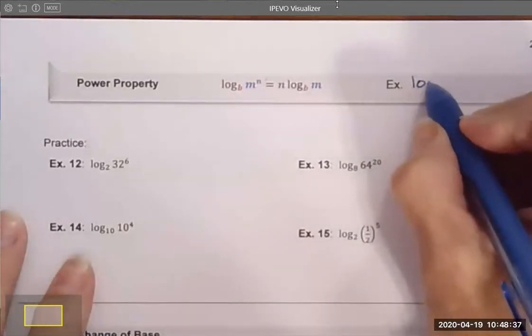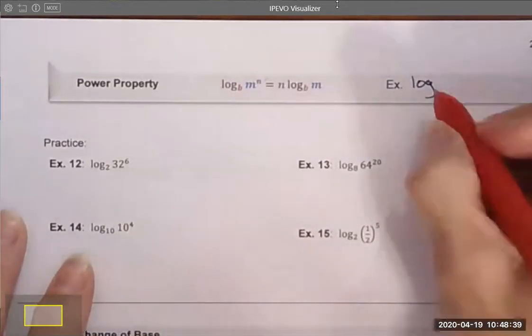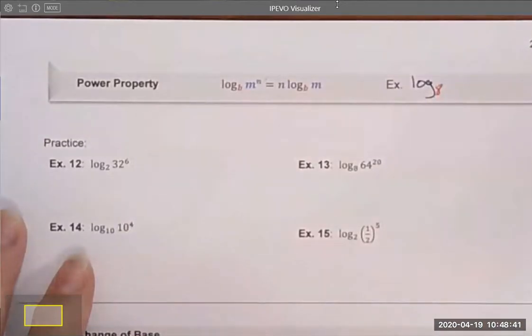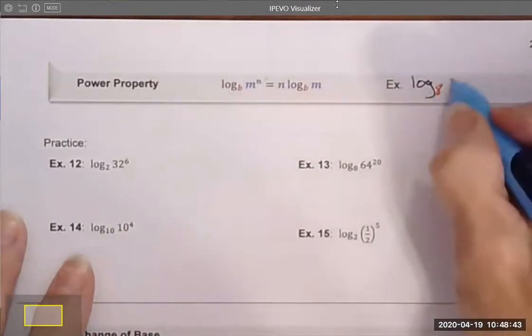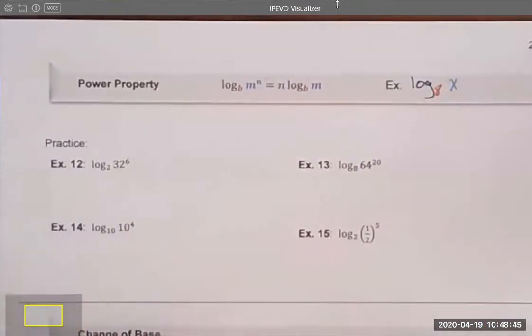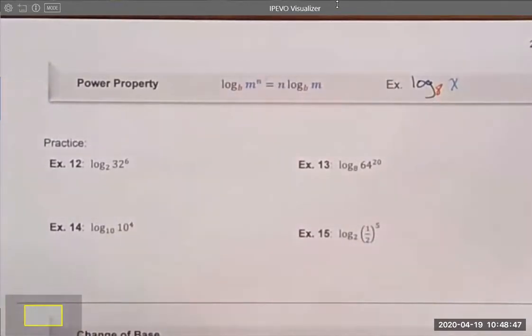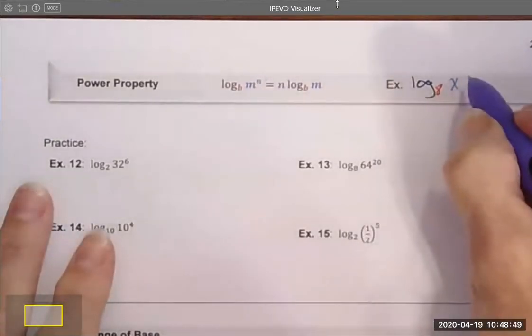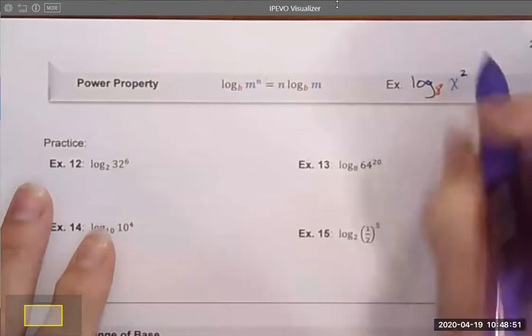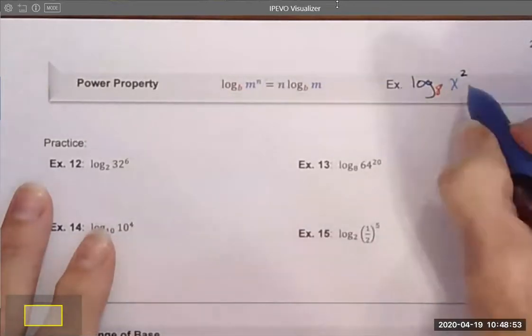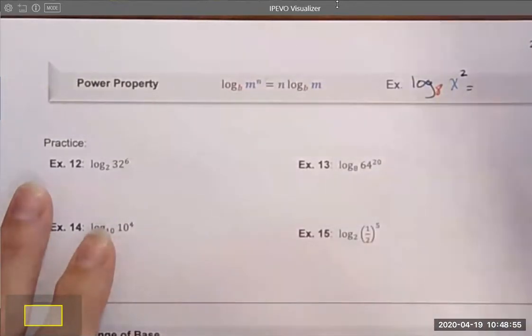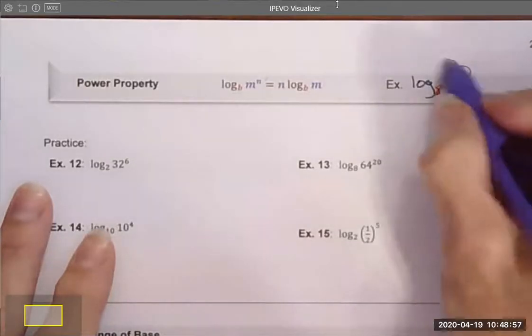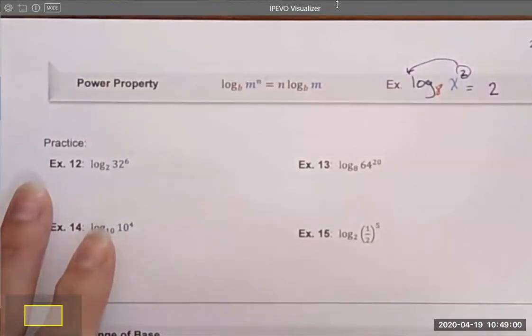If I look at an example, let's say log base 8 of x. And this time we are going to square this. We're going to raise it to some power. And this property says that I can rewrite this by taking this exponent and moving it to the front of my log statement.